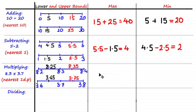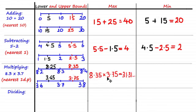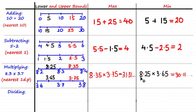Calculating the max and min when multiplying is more straightforward than for subtraction. To get the highest possible value you multiply the two largest numbers, which are the upper bounds: 8.35 multiplied by 3.75, which equals 31.31 and so on. To calculate the minimum you multiply the two smallest values — the lower bounds — which gives 8.25 times 3.65, equal to 30.11 and so on.